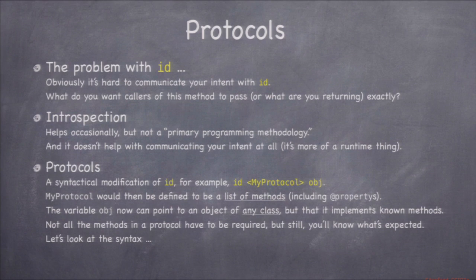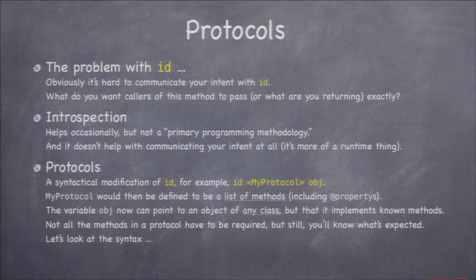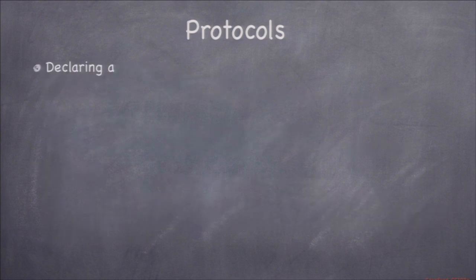It's kind of the same thing as NSString star versus ID — that's just syntax in the compiler that makes no difference at runtime. The fundamental syntax is: ID angle bracket protocol name, then the object name. That declares a variable which is an ID but with the additional information that it implements a certain protocol, telling the compiler and readers of your code a little bit more.